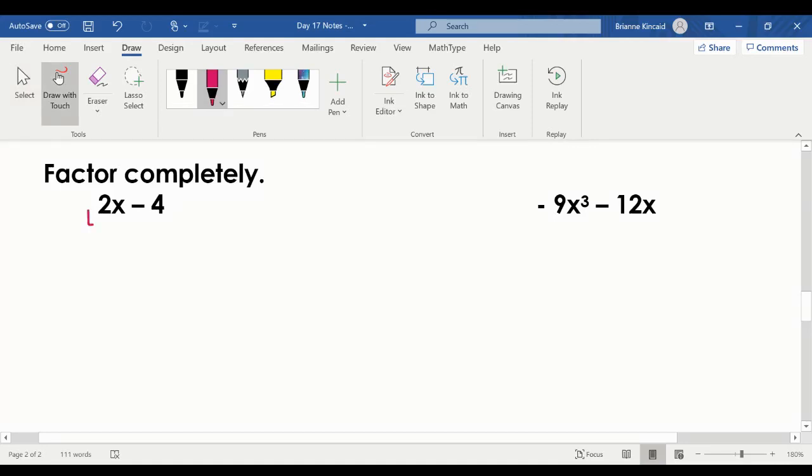I have two terms here. I have 2x and I have negative four. We always want to try to make our biggest term positive. That's typically the biggest exponent. So that would be the first term in this case.